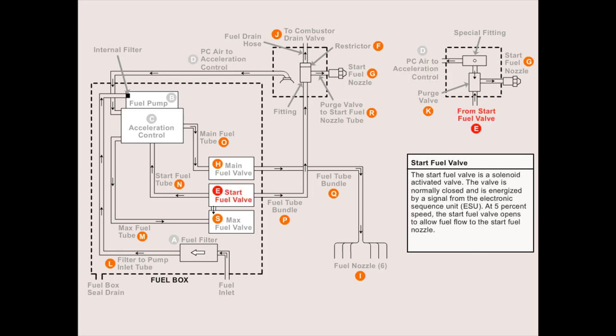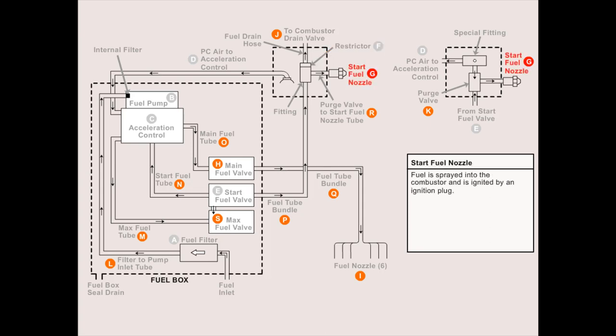The start fuel valve is a solenoid activated valve. The valve is normally closed and is energized by a signal from the electronic sequence unit, the ESU. At 5% speed, the start fuel valve opens to allow fuel flow to the start fuel nozzle. The restrictor controls the amount of air flow that purges fuel from the start fuel nozzle. Fuel is sprayed into the combustor and is ignited by an ignition plug.